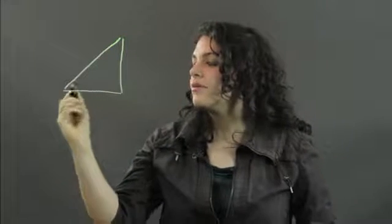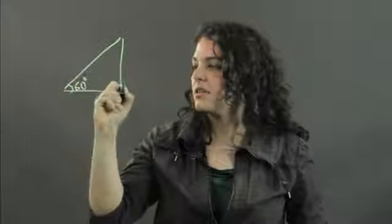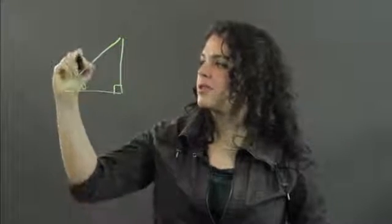So if we have a triangle, a right triangle, and let's say we have an angle here of 60 degrees, and we've got a hypotenuse of 10.